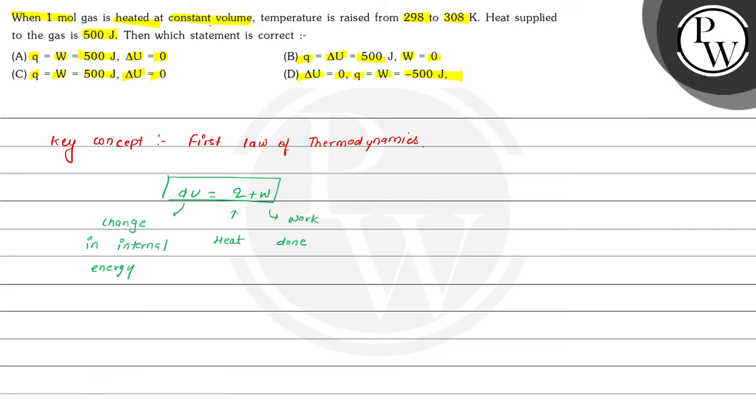Now we can see that in this question, it is saying that constant volume is taken. That means we know that W equals minus PdV. This dV means change in volume.